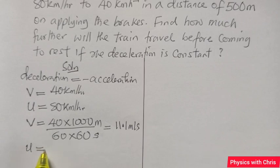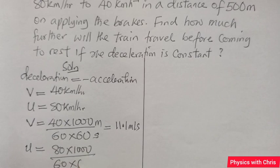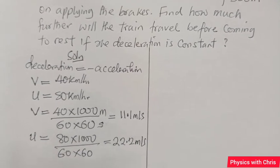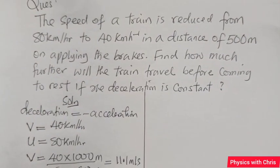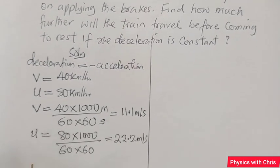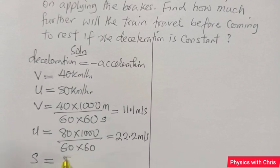The initial velocity is 80 times 1000 divided by 60 times 60, which gives me 22.2 meters per second to the nearest one decimal place. We are given the distance covered: this train, in the course of speed reducing from 80 to 40, covered a distance of 500 meters. So we include it in our list of known parameters.